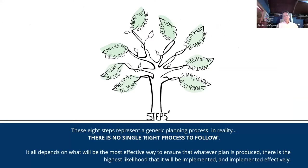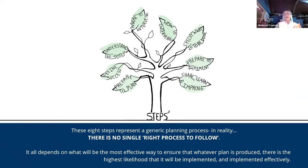These are the eight steps that underpin this planning process — the tangible things you'll actually see going from preparing to plan, through defining success, understanding the system, identifying where to intervene, agreeing how to intervene, specifying what is to be done, preparing to implement, and sharing, learning, and improving. These steps don't always stay exactly in this order, aren't necessarily the same size in length and duration or depth, but they often allow for effective plans to be produced.